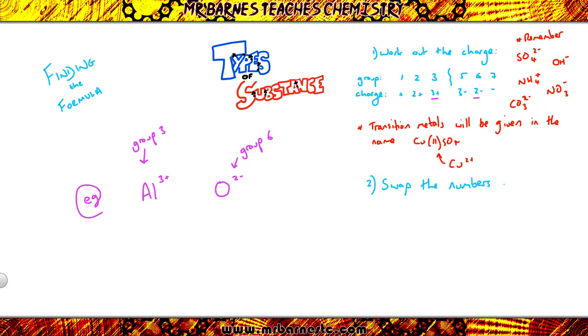Step 2, swap the numbers. So get rid of the charge, swap the numbers, and then make them subscript. Now it's important to choose the numbers from the top, nothing from down at the bottom, especially if you have polyatomic ions. So if we have a look at aluminium and oxygen, I've got my 3 plus at the top, so I'm going to take that 3, and I'm going to put it down here, and then my 2 minus, I'm going to take that 2, and I'm going to put it down here. So my formula becomes Al2O3.